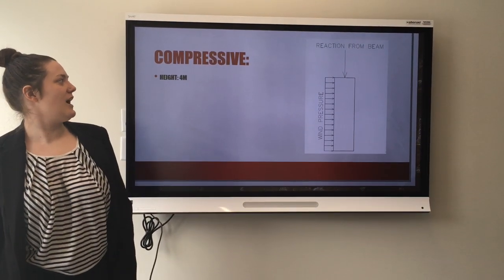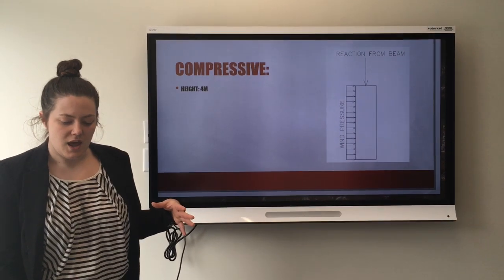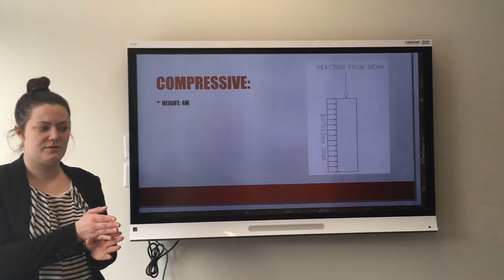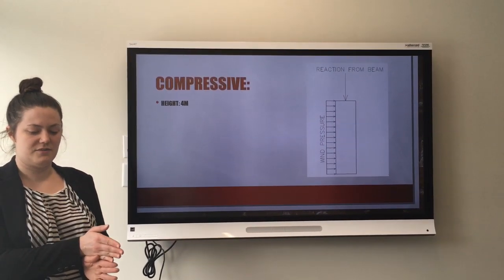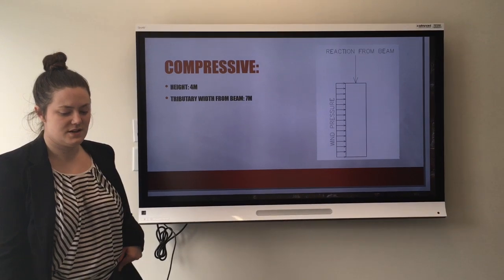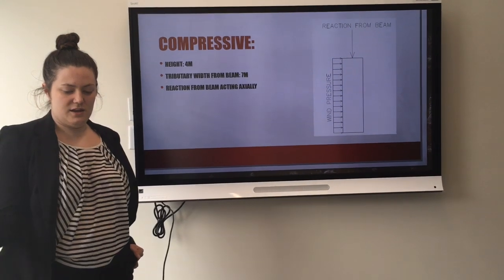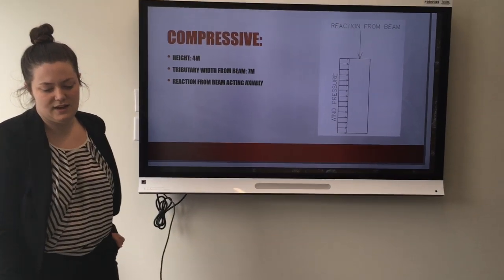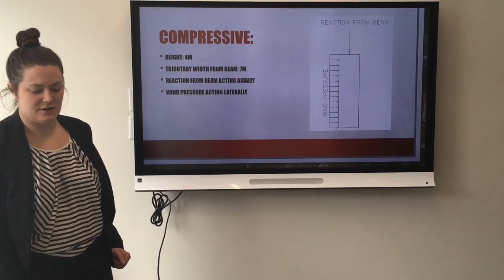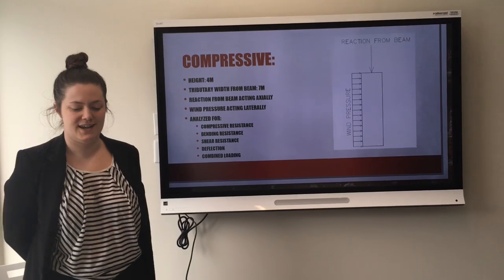From there, the reaction caused from the beam sitting on the member was applied to a column. This image is an example of an exterior column, so we have the reaction of the weight of the beam, and the trusses, and the roof sitting on top of it, and the wind pressure acting on the side causing some bending. The worst case scenario height was 4 meters. We treated it with a tributary width from the beam of 7 meters. The reaction from the beam was treated as acting axially, right in the center, and the wind pressure was acting laterally, so it had to be analyzed for compressive resistance, bending resistance, shear resistance, deflection, and combined loading.